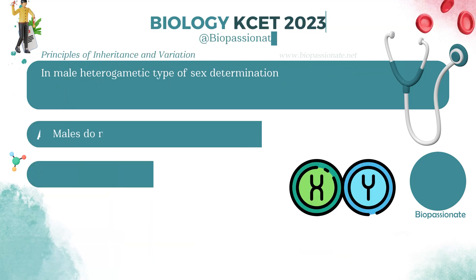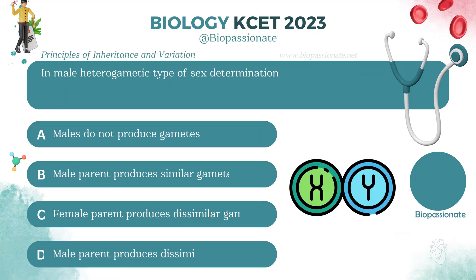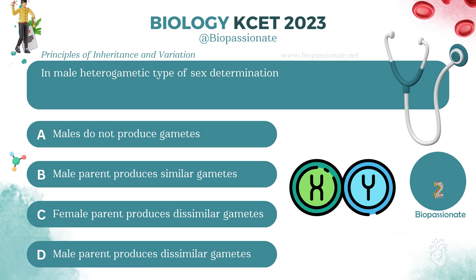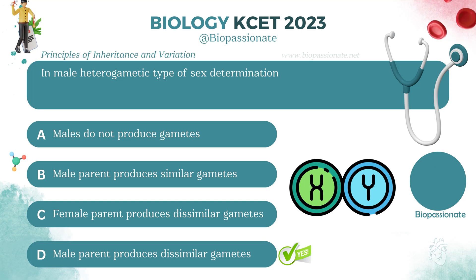In male heterogametic type of sex determination, the male parent produces dissimilar gametes.